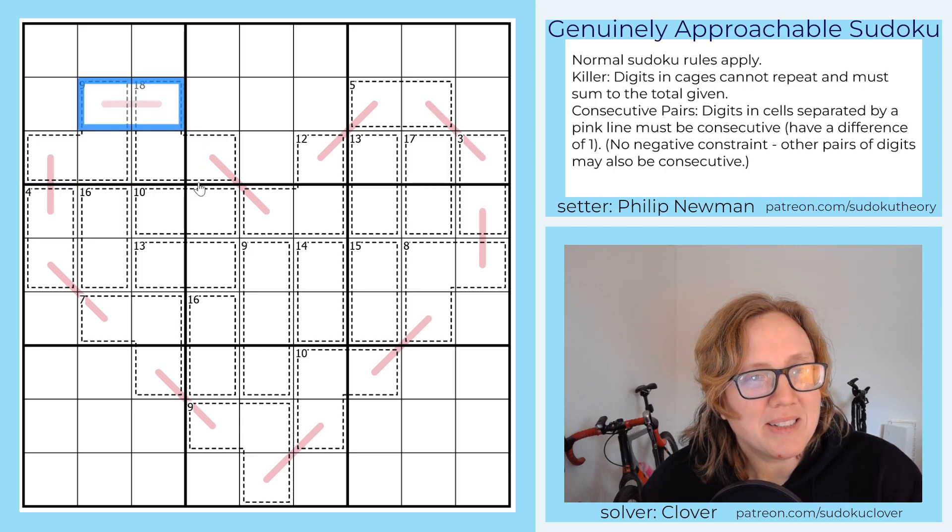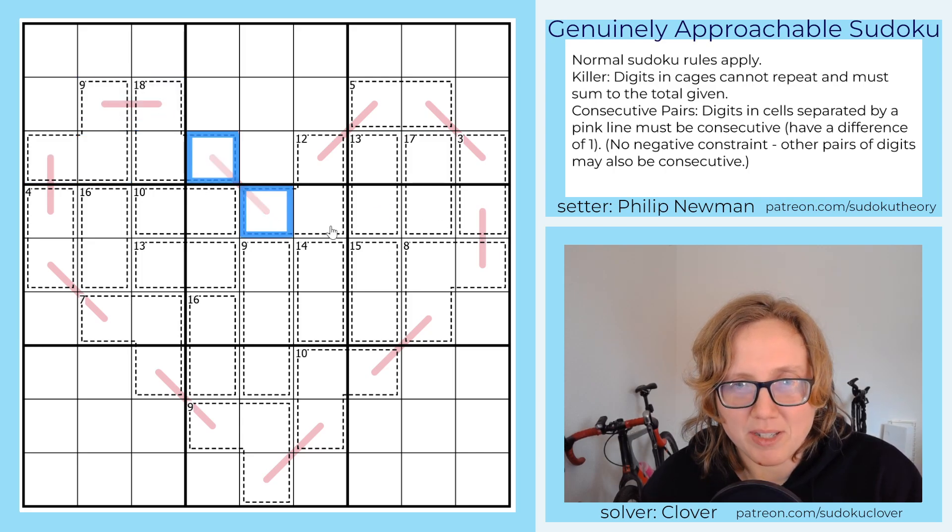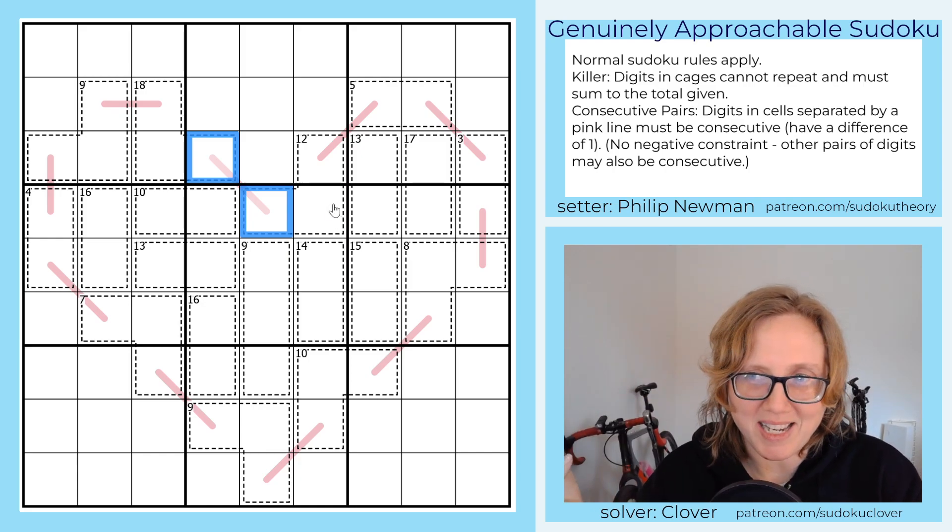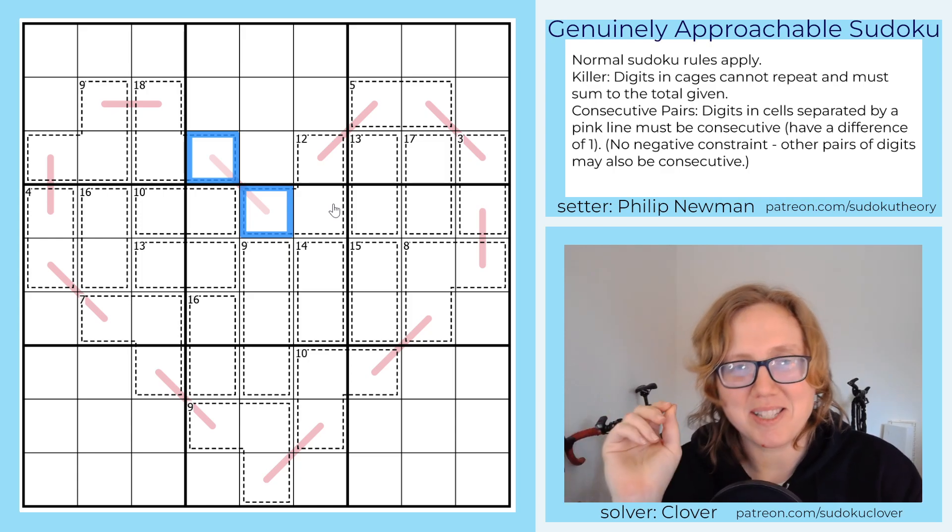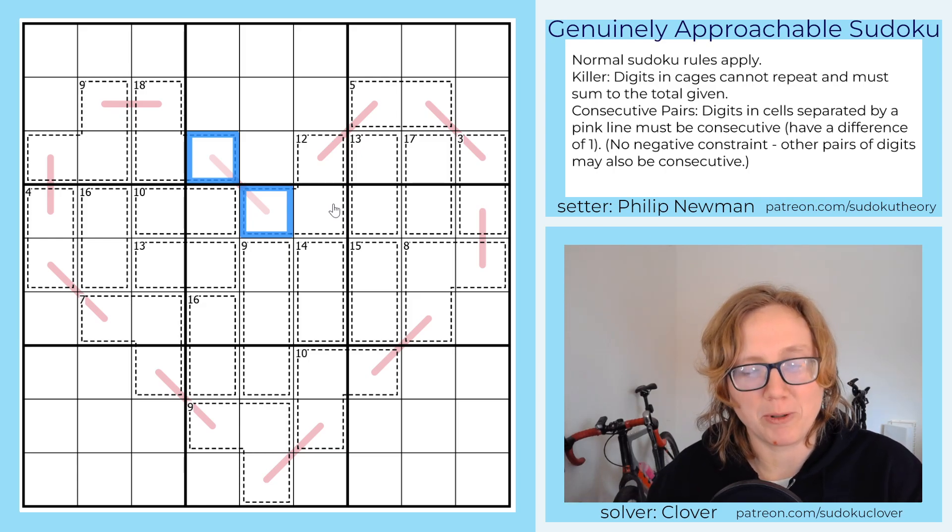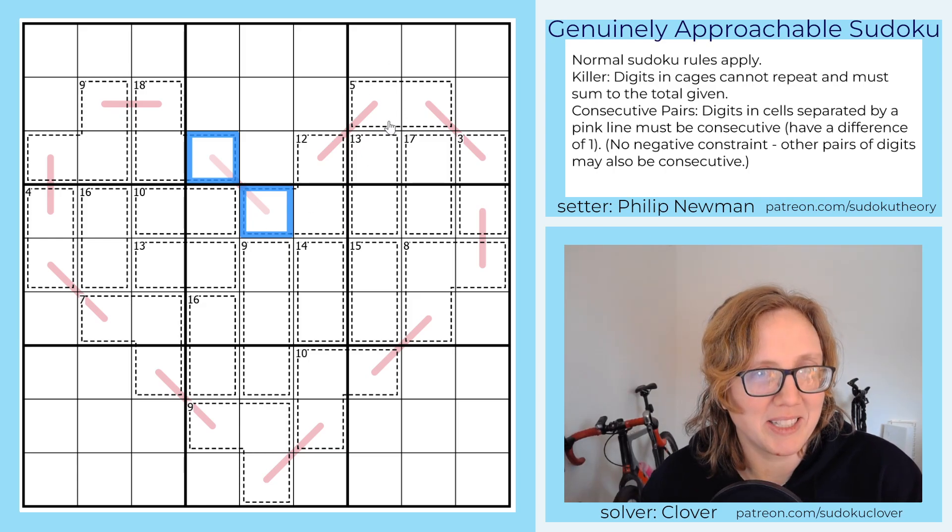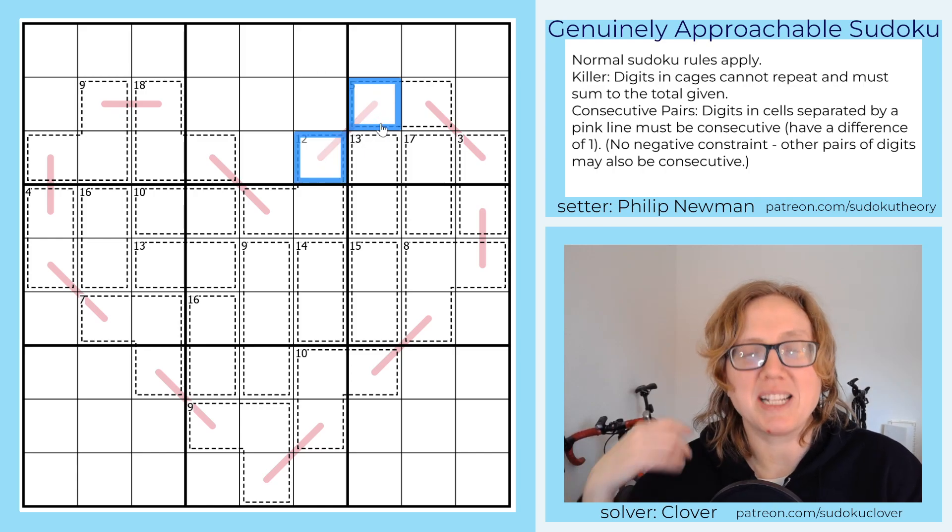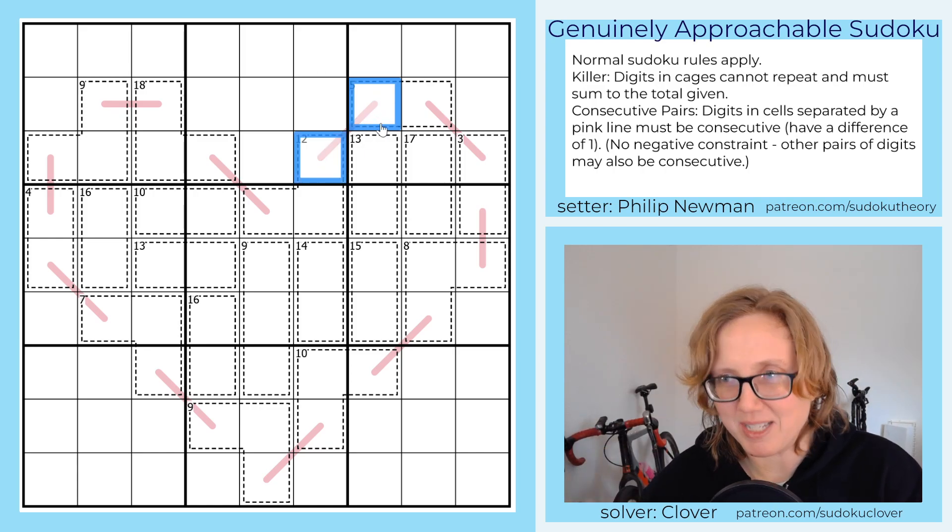And also we have these pink lines that represent consecutive pairs. The reason that they are lines here instead of the conventional consecutive pairs dots is that Philip has given us some diagonally adjacent lines, and generally you wouldn't be able to do that if you were using a little white consecutive pairs dot. So these two digits, for instance, have to be consecutive numbers like two and three or six and seven.